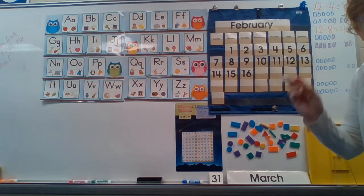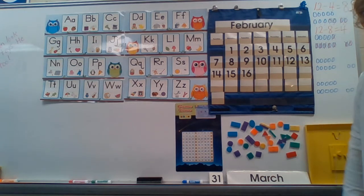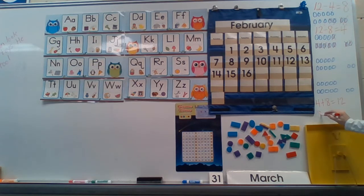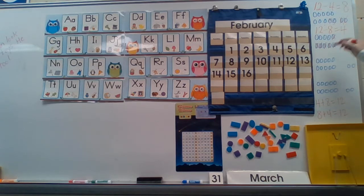12 minus 4 equals 8, and 12 minus 8 equals 4. Go figure, because watch: 4 plus 8 is 12, and 8 plus 4 is 12. And those three numbers, you can make four number sentences out of them and call it a fact family.